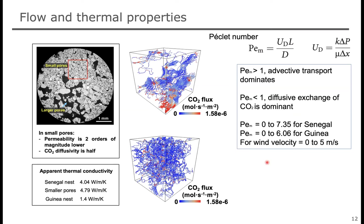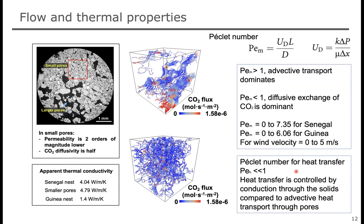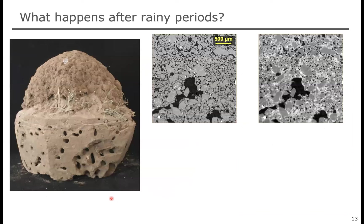Another thing we looked into is heat transport. We also did Peclet number calculations for heat transfer, and our Peclet number is quite less than one. This means heat is transferred through the interconnected solids by conduction, with not much contribution from advective heat through the pore space — which is sort of expected. Looking into conductivity, the Senegal nest overall has less conductivity compared to if we didn't have the larger pore space, which makes sense because larger spaces provide cushioning or insulation. Guinea had conductivity quite small compared to Senegal, because of the large quantity of clay.